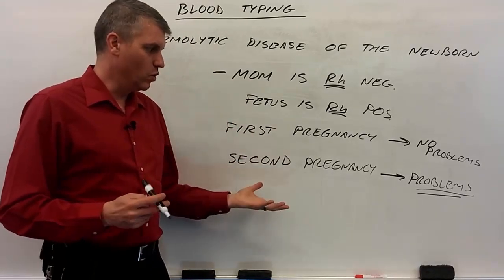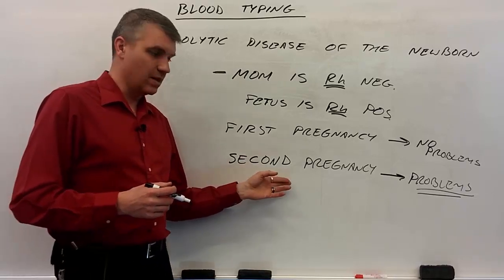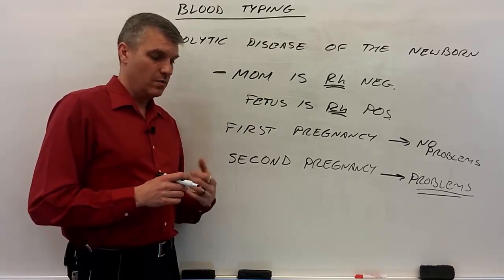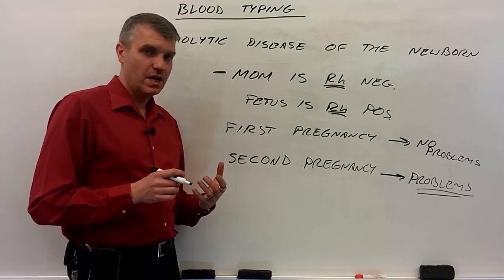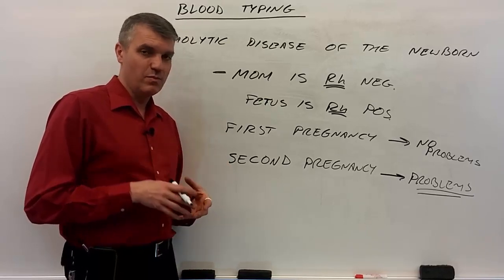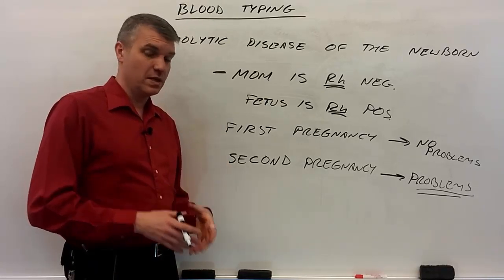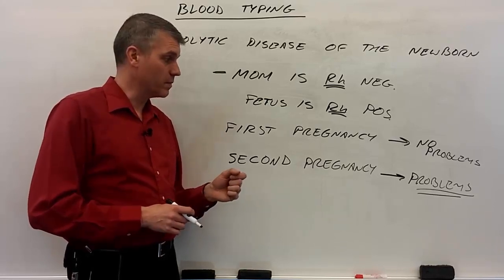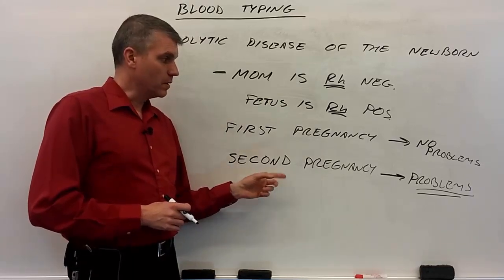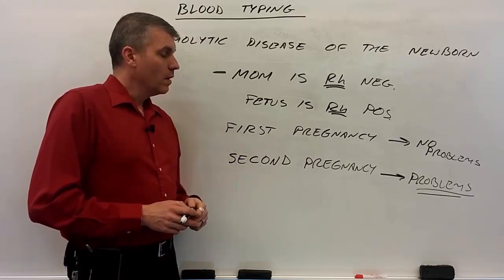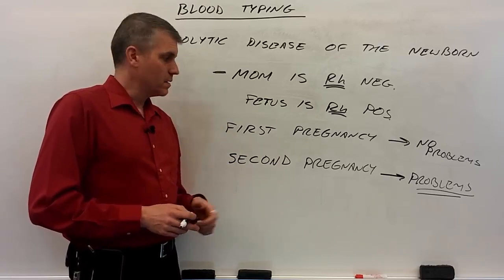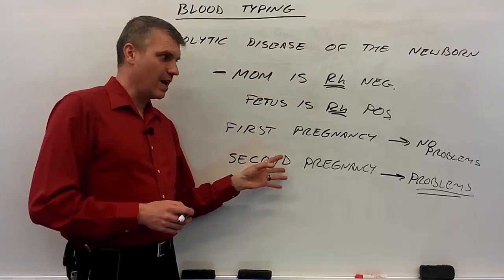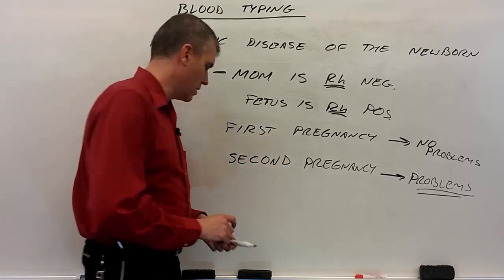So within the womb, the baby can be anemic or worse. It can cause spontaneous abortions or miscarriages. And of course it can cause the baby to be born underweight and potentially need a blood transfusion right when they're born in order to help keep them going. So it's a problem. This is what can happen if we don't do anything.